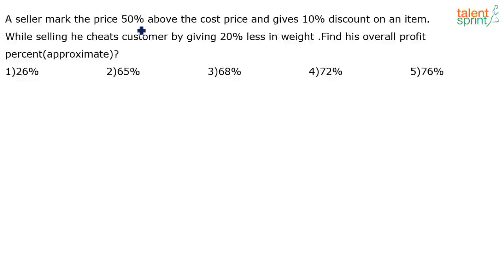A seller marks the price 50% above the cost price and gives 10% discount on an item. While selling, he cheats the customer by giving 20% less in weight. Find his overall profit percentage.